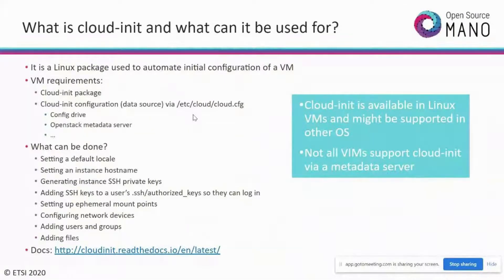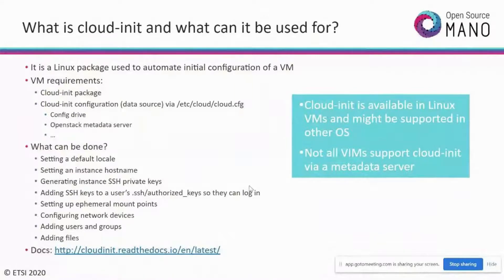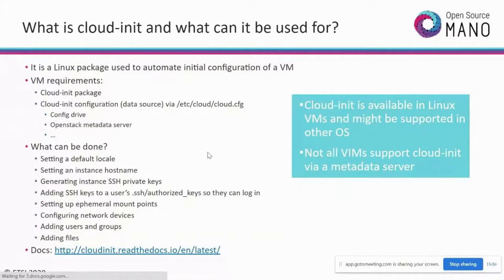For uploading packages, we use the OSM CLI command: OSM NF package create with the path to the VNF package. This command validates the package, builds it in the star format required by the orchestrator, and then uploads it to OSM — all in a single command applied per VNF package. For the whole slice, we onboard three different packages: the Magma KNF, the access gateway VNFD, and the VOS router VNFD.